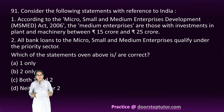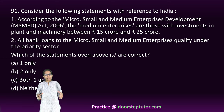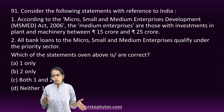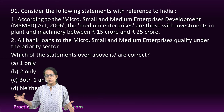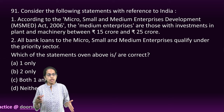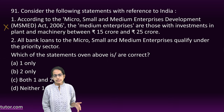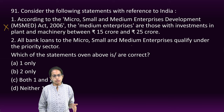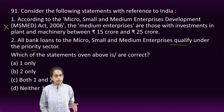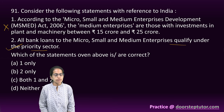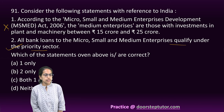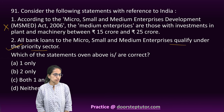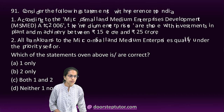According to MSME criteria: up to one crore, one crore to fifty crore, and fifty crore and above. Statement 1 is incorrect. Bank loans to micro, medium, and small enterprises qualify for priority sector lending — that is correct. So statement 2 is the only correct option.